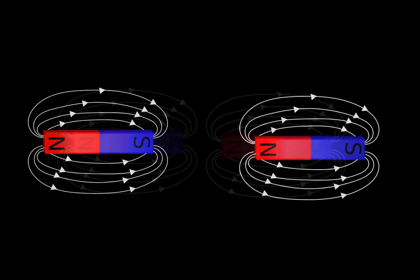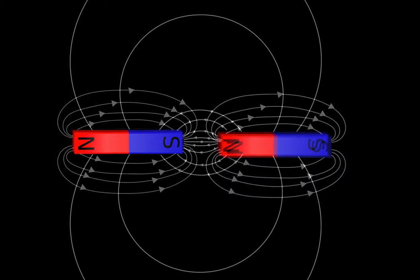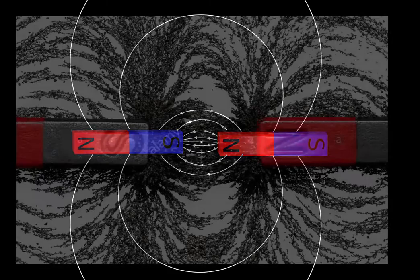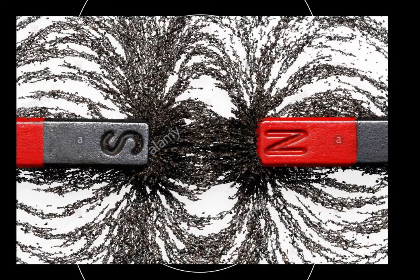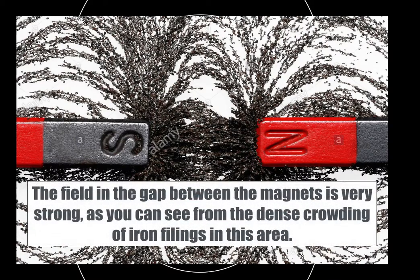Notice what happens when you do a north and south — those magnetic field lines do interact with each other. They envelop each other, kind of like a hug, and bring each other closer. The most intense field effect is felt in the middle, and you can see the large crowding of magnetic iron filings in that area.